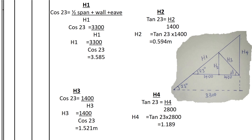For H4, the king post, we use the triangle formed by the 23-degree pitch and 2800mm base. Using tan 23° equals opposite over adjacent, where the opposite is H4 and the adjacent is 2800mm, H4 equals 1.189 meters.